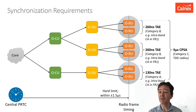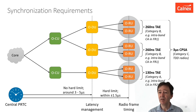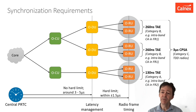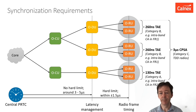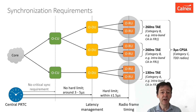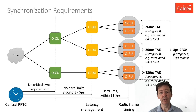For the distributed unit, there is no hard limit on synchronisation. They do require somewhere in the region of 3 to 5 microseconds for latency management. And the centralised unit itself has no synchronisation requirement on it — it does not need to be synchronised.